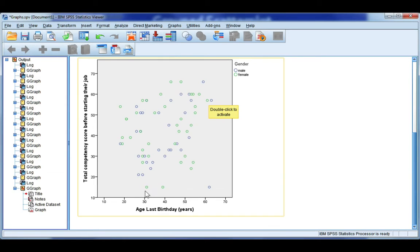It does look like there's a few females here that are outside the regular trend, but otherwise they're both increasing. So as males and females get older, they tend to be more competent at their job, and that's probably because they have more experience and more education.